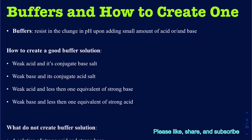Buffers are any chemical or set of solution that's going to be resisting the change in pH when you add a small amount of acid or base. A live example of a buffer that exists in our body is blood — the pH is about 7.4 and you don't want to change that pH too much. To keep this pH of about 7.4 in the blood, you must have a really good buffer system, and the chemical we use to create that buffer is carbonic acid inside the blood.